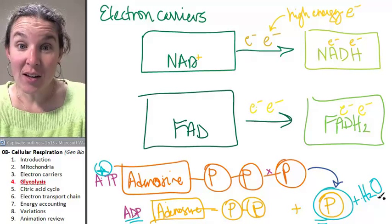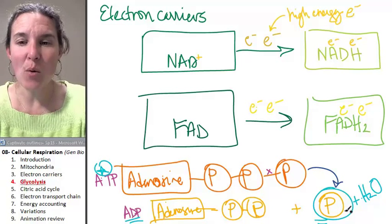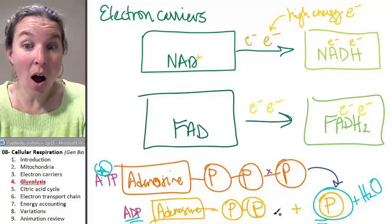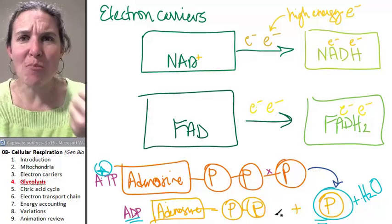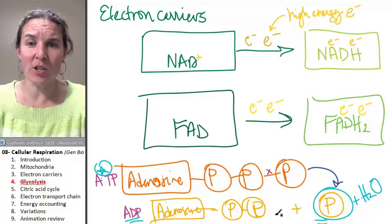Where do we get the energy to do this? Where do we get the energy to take ADP, rip a phosphate off of a water molecule, and push them together to produce ATP? Where does the energy come from?